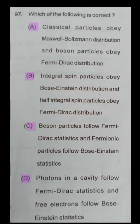So, the answer to the question is Option B, which says integral spin particles obey Bose-Einstein distribution and half-integral spin particles obey Fermi-Dirac distribution.